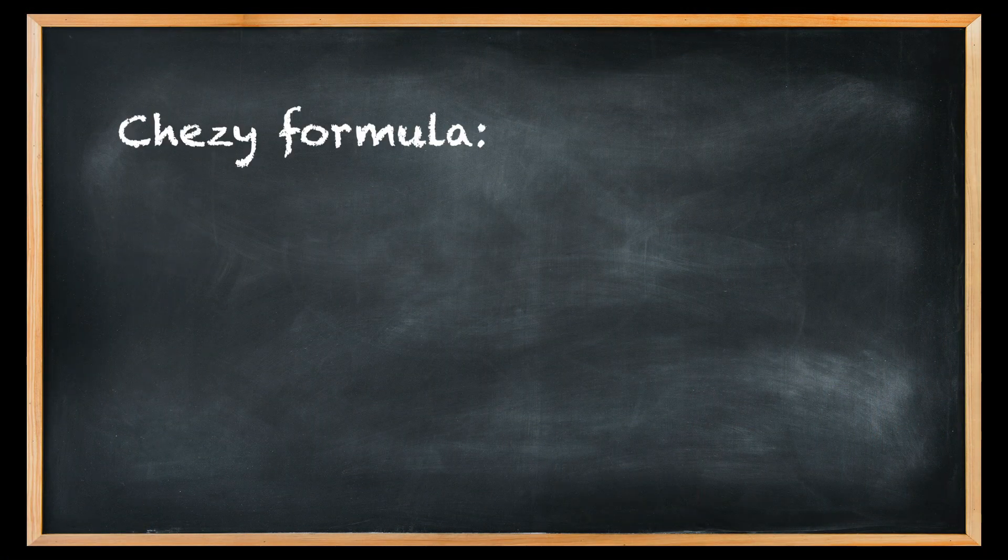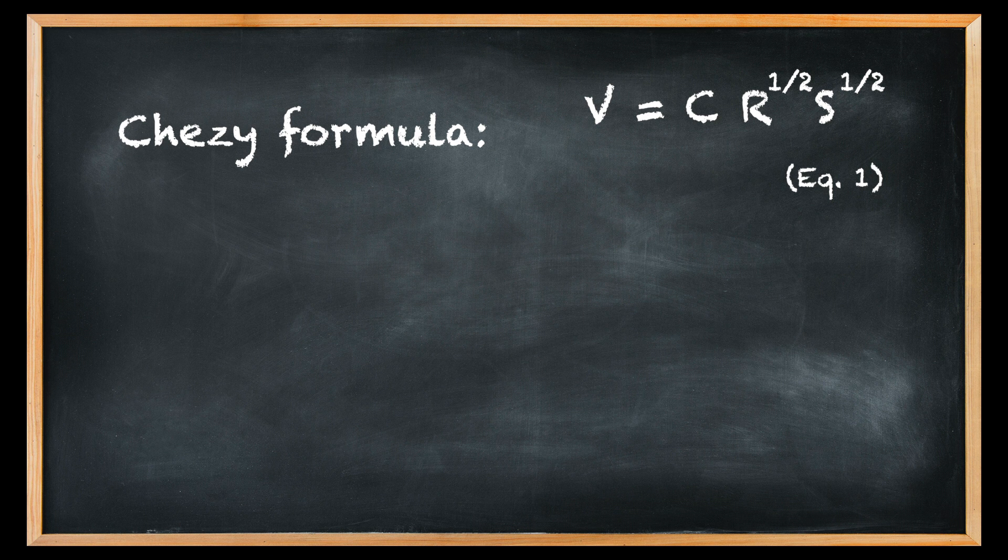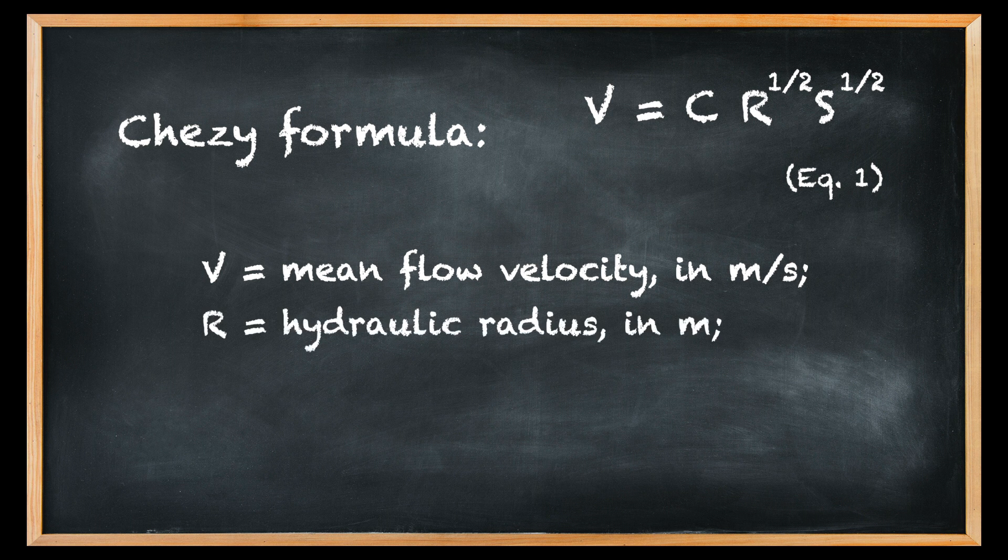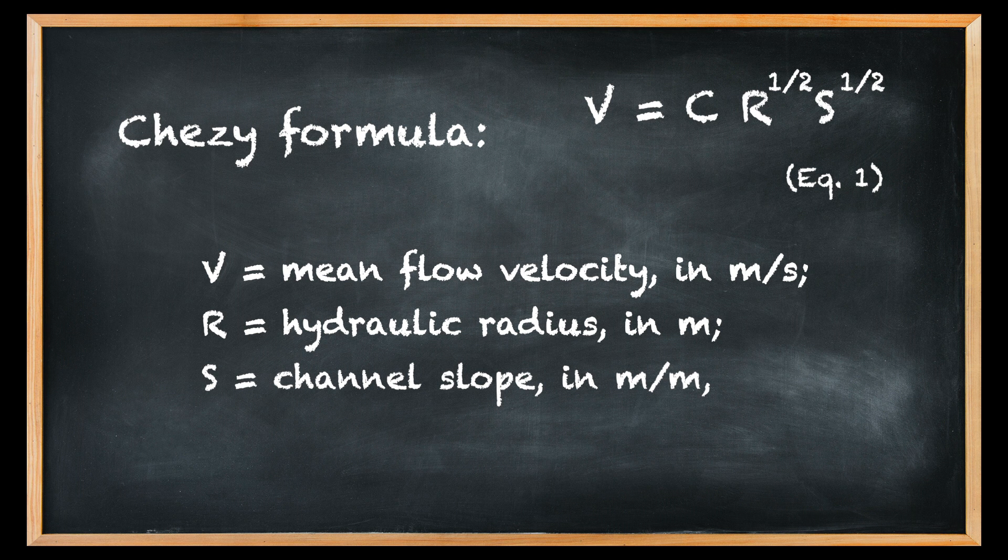The Chezy formula is the following, in which V equals mean flow velocity in meters per second, R equals hydraulic radius in meters, S equals channel slope in meters per meter, and C equals Chezy coefficient in meter to the one-half power per second.